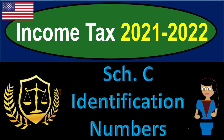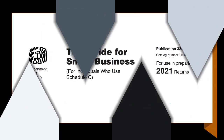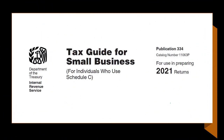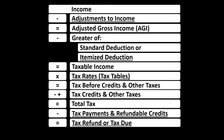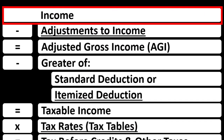Income Tax 2021-2022 Schedule C Identification Numbers. Get ready to get refunds to the max, diving into Income Tax 2021-2022. Most of this information can be found in Publication 334, Tax Guide for Small Business, found on the IRS website at irs.gov. We're looking at the first line of the income tax formula, the income line.